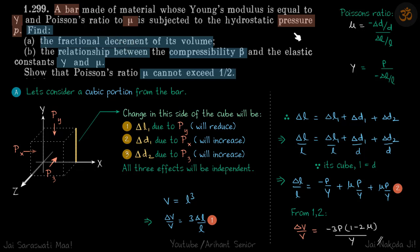We have a bar which is subjected to pressure. We know the Young's modulus and Poisson's ratio of that bar. We need to find: the fractional decrement of its volume, the relationship between compressibility beta and Y and mu, and we need to show that Poisson's ratio mu cannot exceed half. The shape of the bar is not given, but we take a small section and whatever is the fractional decrement for that section, we assume it holds for the whole bar.